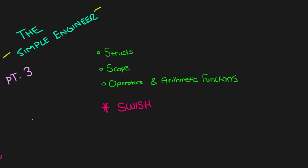Welcome to another video by The Simple Engineer. Today we're continuing part three of programming in Prolog, covering structs and their implementation, how they're used and what they're used for. We'll also look at scope and where certain variables can be accessed within rules, as well as operators and arithmetic functions. You'll start to realize that Prolog's ability to manipulate numbers is actually very weak.